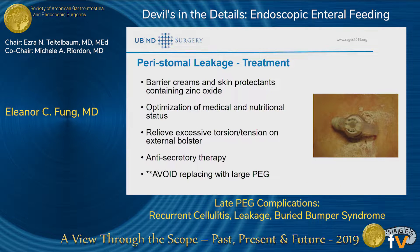In terms of treatment, first is really doing conservative management: using barrier creams and skin protections containing zinc oxide, or if there's a fungal infection around the tube, applying antifungal powders or creams. You really want to optimize medical and nutritional status as much as possible, and relieve any excessive torsion or tension on the external bolster. You can also try using antisecretory therapy such as PPIs or carafate. One counterintuitive point — really avoid placing a larger PEG tube in. Because if you put a larger PEG in, the hole is actually going to enlarge bigger and you're going to have more leakage down the road.